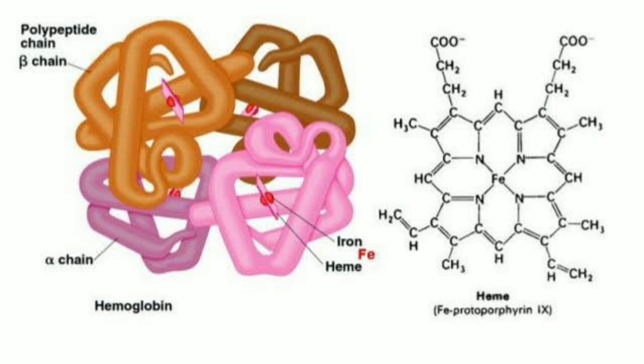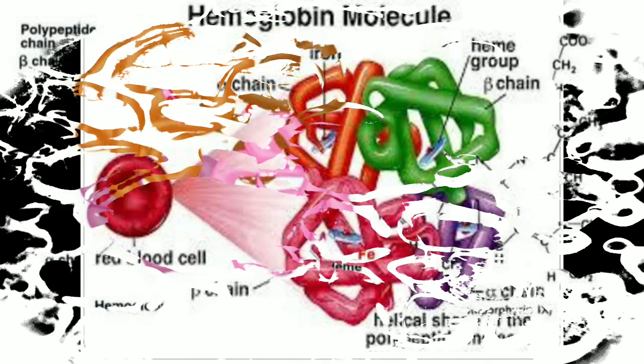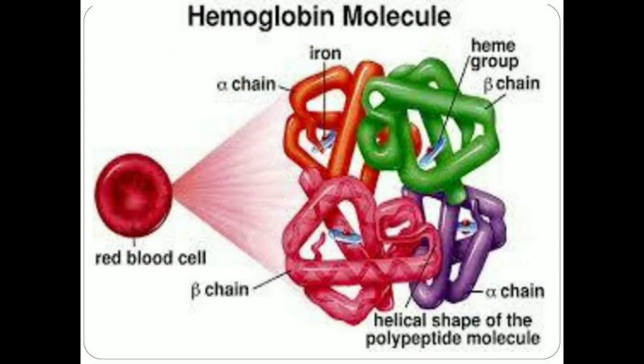The types of hemoglobin chains in a hemoglobin molecule determine the binding affinity of hemoglobin for oxygen. Each hemoglobin chain binds with one molecule of oxygen, making a total of four oxygen molecules per hemoglobin molecule.